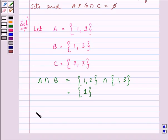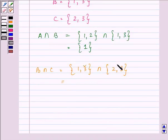Proceeding on, let us find out B intersection C. So, which are the elements which are common to them? You are absolutely right. That is element 3, and now let us find out A intersection C.